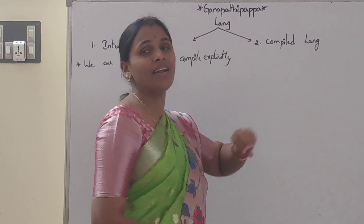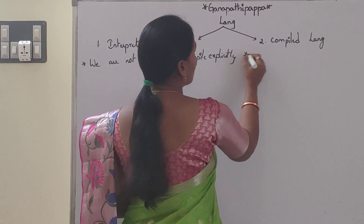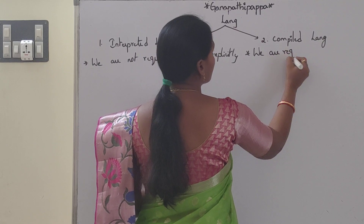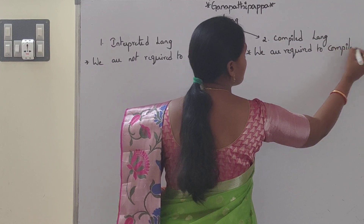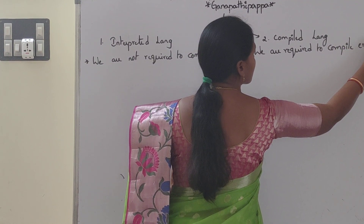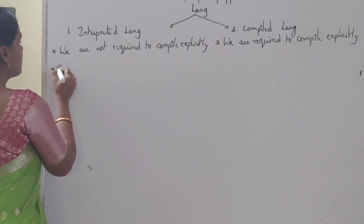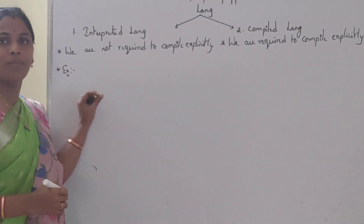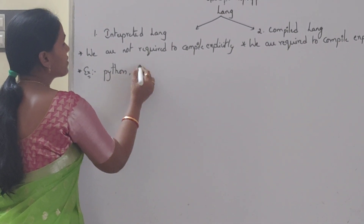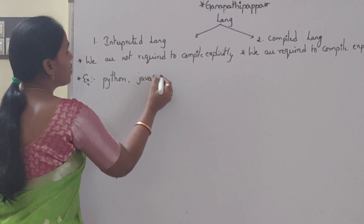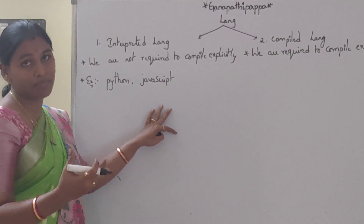What is compiled language? Compiled language means we are required to compile explicitly. Examples of interpreted languages: Python and JavaScript. These two languages are interpreted languages and have built-in compilation.